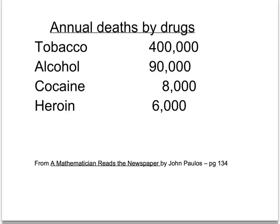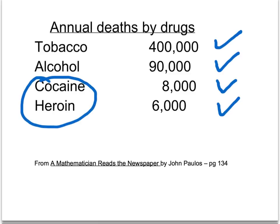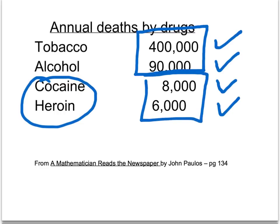Consider this data on annual deaths by drugs: tobacco kills 400,000 people per year, alcohol 90,000, cocaine 8,000, and heroin 6,000. By that logic it seems safer to take cocaine or heroin than tobacco and alcohol — but that makes no sense. The reason these numbers come out this way is that far more people use tobacco and alcohol, so the number of deaths is naturally higher. This data would be misleading if you tried to conclude cocaine and heroin are the safer drugs.